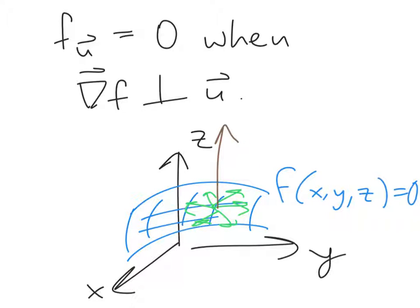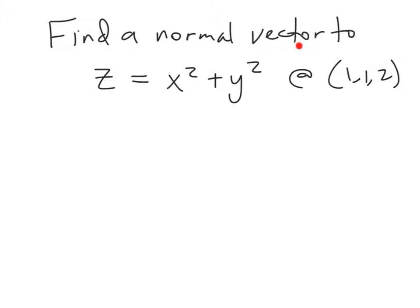This is quite convenient. It implies that if we're able to write a surface as a level set of a function of three variables, we can just use the gradient to find a normal vector. And once we find a normal vector, one thing that's straightforward to do is use it to find a tangent plane. If we want to find a normal vector to the surface z = x² + y² — this is a paraboloid — at the point (1, 1, 2), we can first rewrite this as a level surface of a function of three variables.